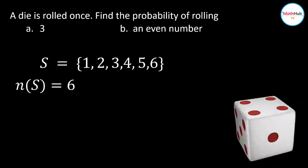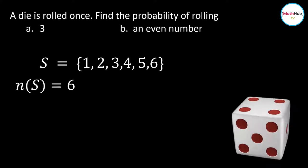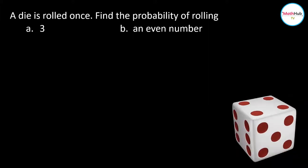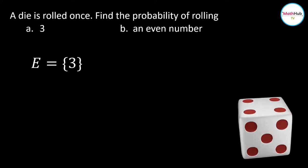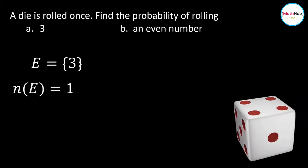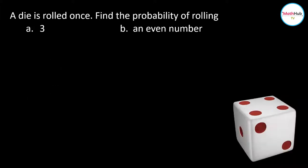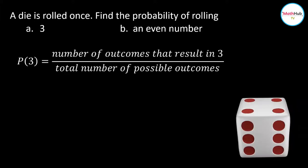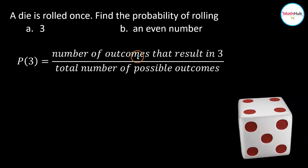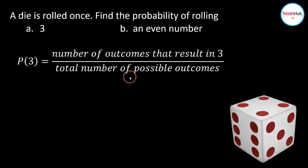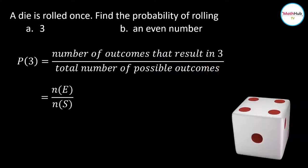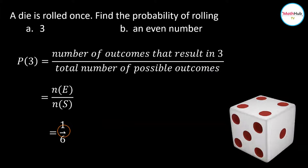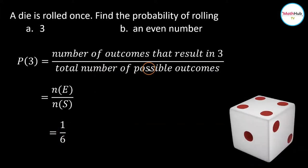To get the probability of rolling a 3, find the number of outcomes that result in 3. There is only one way to roll a 3, so N(E) = 1. Using the formula for theoretical probability, the probability of rolling a 3 is equal to the number of outcomes that result in 3 divided by the total number of possible outcomes, which is equal to 1 over 6.